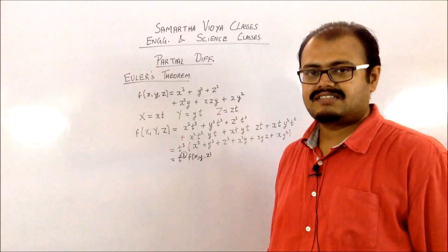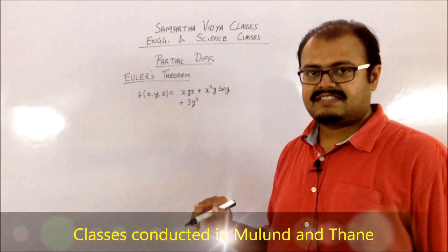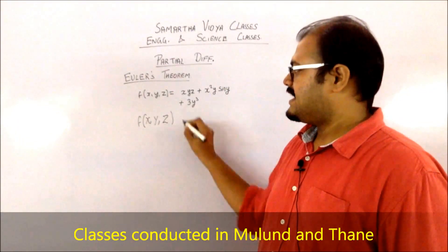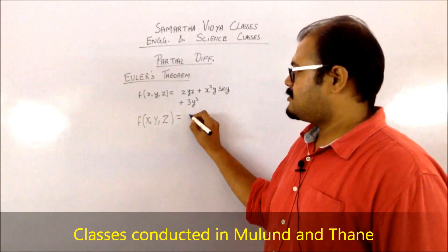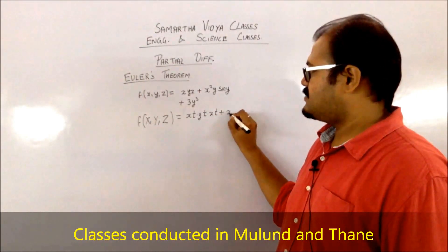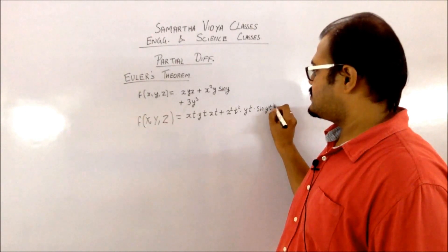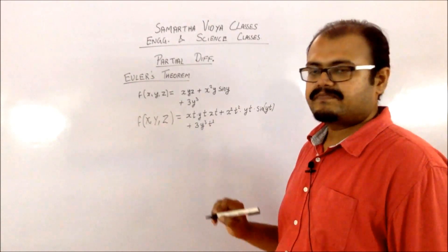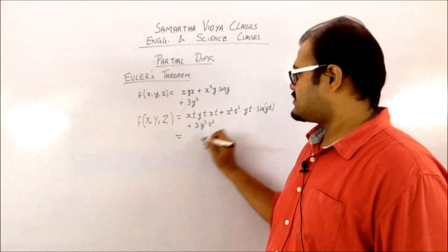Let us take one more example in which the function is going to be non-homogeneous. You need to represent it in terms of capital X, Y, Z and replace x with x·t, y with y·t, and z with z·t. After replacement, you will be getting x·t·y·t·z·t plus x square·t square into y·t into sin(y·t), plus 3y cube·t cube. You can take t cube as common from all terms.